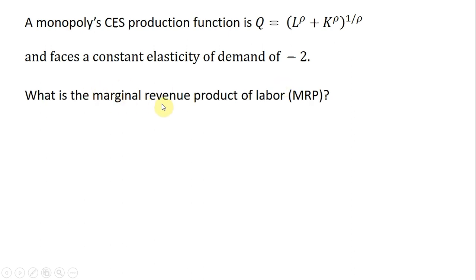What is the marginal revenue product of labor? The marginal revenue product of labor is marginal revenue multiplied by the marginal product of labor. So we got to get two things here: marginal revenue and marginal product of labor.